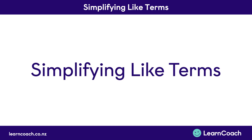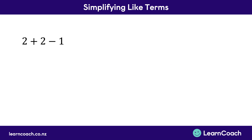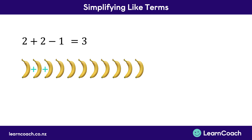Welcome to this video on simplifying like terms. In math you're going to get all sorts of pesky expressions like 2 plus 2 minus 1 when somebody could simply just say 3. It's the same for all sorts of things, not just numbers. You might say I have a banana and a banana and a banana... but it's much easier just to say I have 11 bananas.